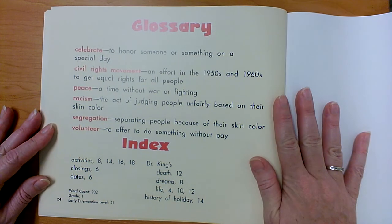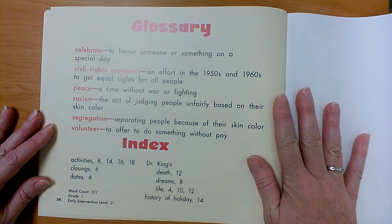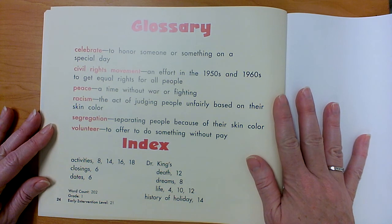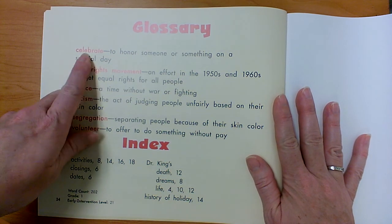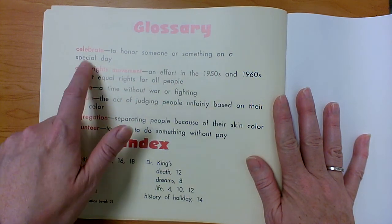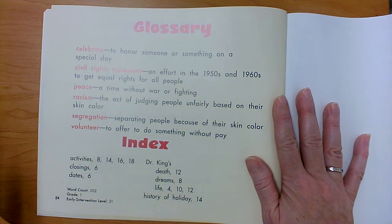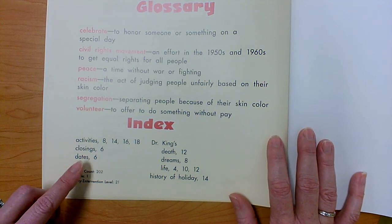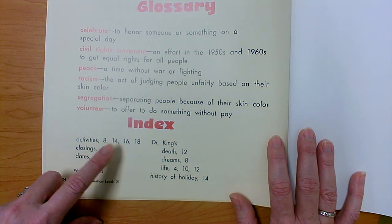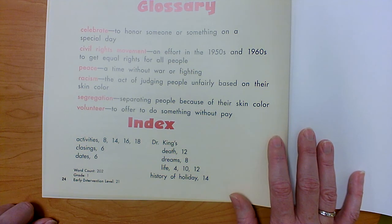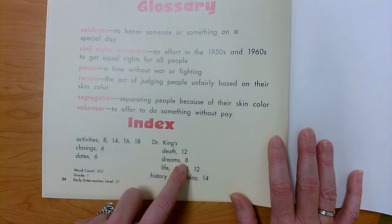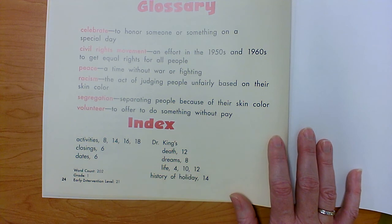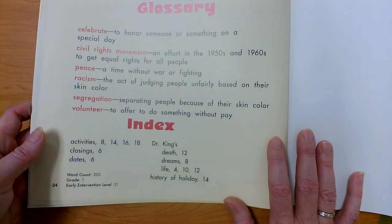Nonfiction books have a glossary and an index in the back. A glossary tells us some of the special words and what they mean. We saw the word 'celebrate' — to celebrate means to honor someone or something on a special day. So a glossary is like a dictionary for this nonfiction book. The index is a little different — it tells us where to find some of the special words. It shows the word 'activities' on pages 8, 14, 16, and 18. If we wanted to find the word 'dreams,' it would be on page 8. The index tells us what page they used that word on, while the glossary tells us what that word means.